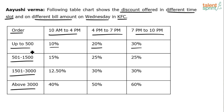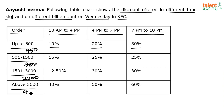Let's take some example values to explain how to calculate discounts for different time slots. Let's say the bill amount is 450, another case 700, another case 2200, and above 3000 let's say 4600. If the bill amount is 450 ordered between 10 AM to 4 PM, you get 10% — so 10% of 450 is 45.